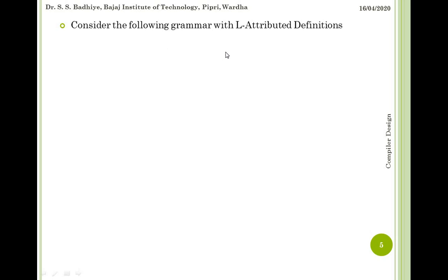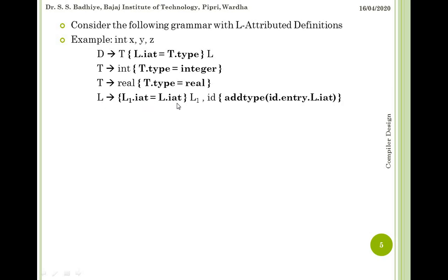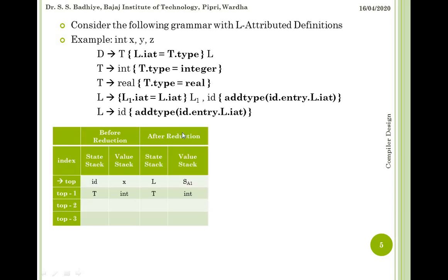Consider the following grammar with L-attributed definitions for the declaration 'int x, y, z'. D derives to T, with semantic action L.inherited equals T.type, followed by L. T derives to int with semantic action T.type equals integer; T derives to real with T.type equals real. L derives to L1, with L1.inherited equals L.inherited, then L1 comma id, and a semantic action addtype(id.entry, L.inherited). L derives to id with addtype(id.entry, L.inherited).